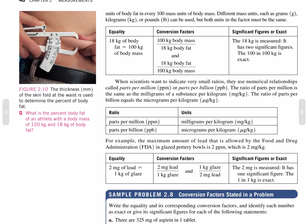When scientists want to indicate very small ratios, they use parts per million (ppm) or parts per billion (ppb). Parts per million equals milligrams per kilogram; parts per billion equals micrograms per kilogram. For example, the maximum amount of lead allowed by the Food and Drug Administration in glazed pottery bowls is 2 parts per million, which equals 2 milligrams per kilogram.